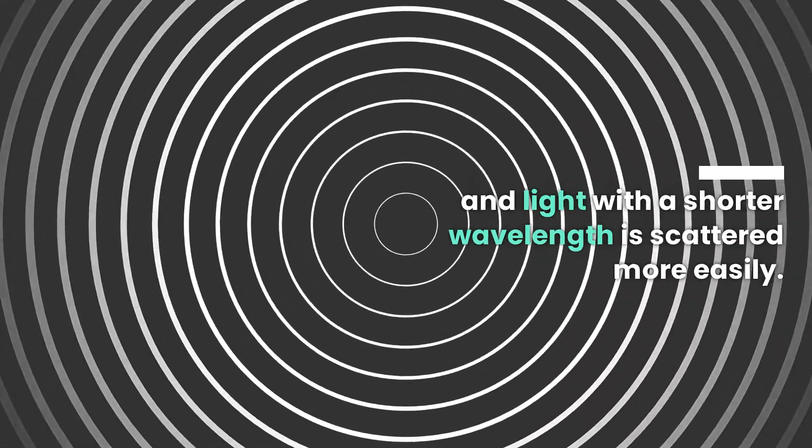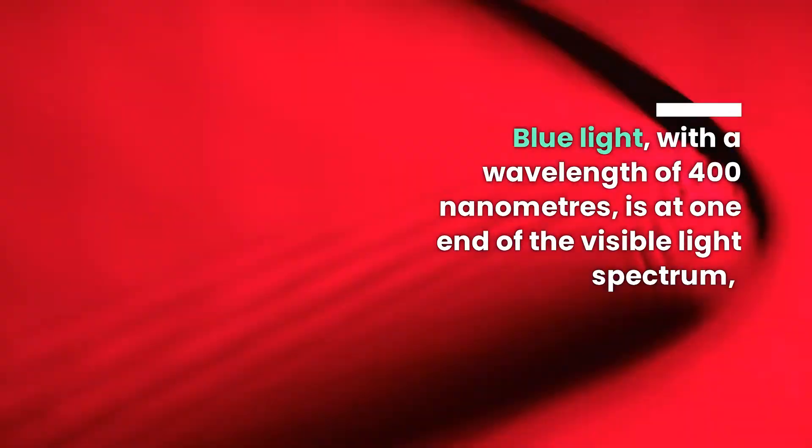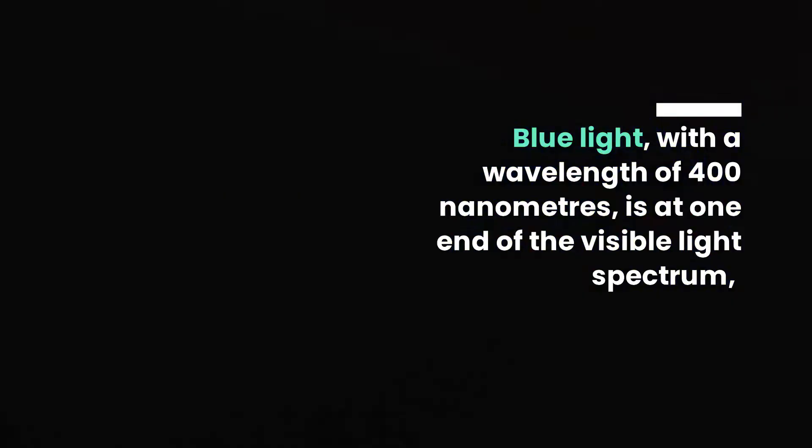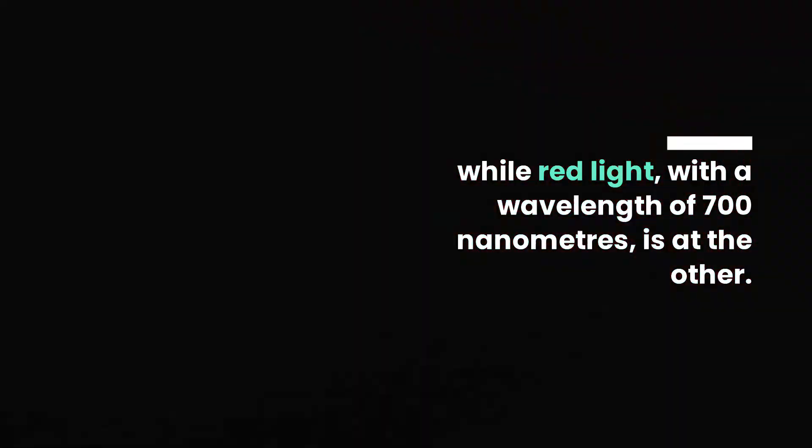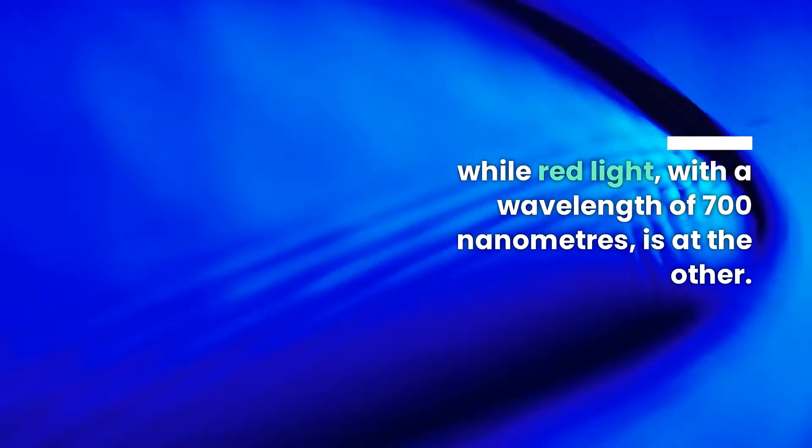Blue light with a wavelength of 400 nanometers is at one end of the visible light spectrum, while red light with a wavelength of 700 nanometers is at the other.